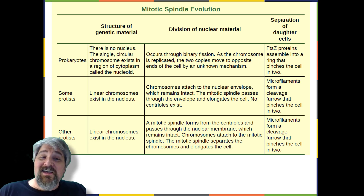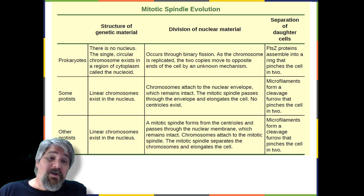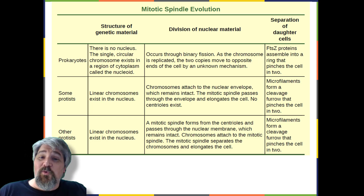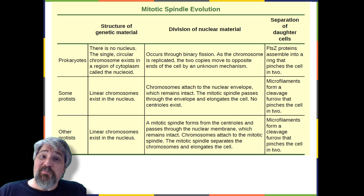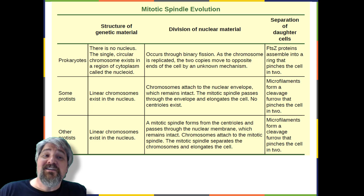Formation of the FTSZ ring triggers the accumulation of other proteins that work together to recruit new membrane and cell wall materials to the site. FTSZ proteins can form filaments, rings, and other three-dimensional structures resembling the way tubulin forms microtubules, centrioles, and various cytoskeletal components. In addition, both FTSZ and tubulin employ the same energy source, GTP (guanosine triphosphate), to rapidly assemble and disassemble complex structures.